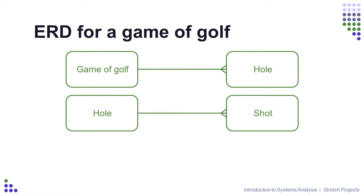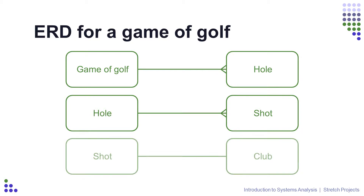If there is such a thing as a one-to-many relationship, it stands to reason that there should also be one-to-one relationships. Let's use our game of golf diagram. For every shot you play, you are only going to actually use one golf club. And because there are as many shots as there are golf clubs used, we don't need to add any crow's feet to that relationship. It's one-to-one.